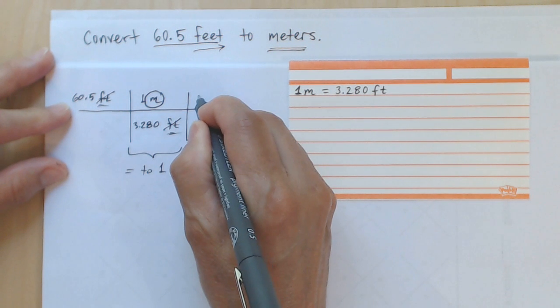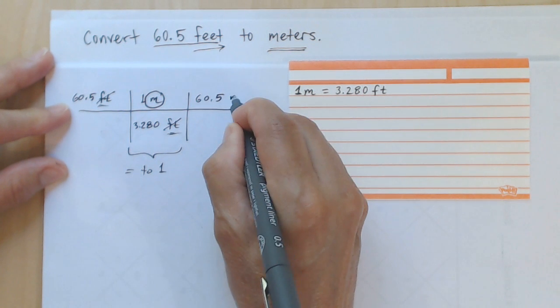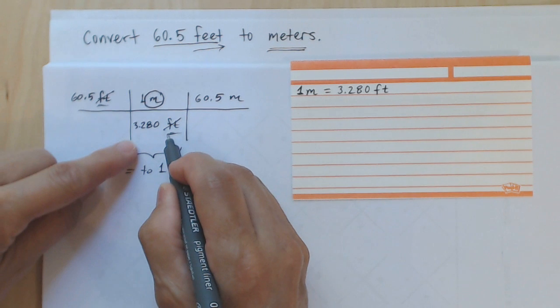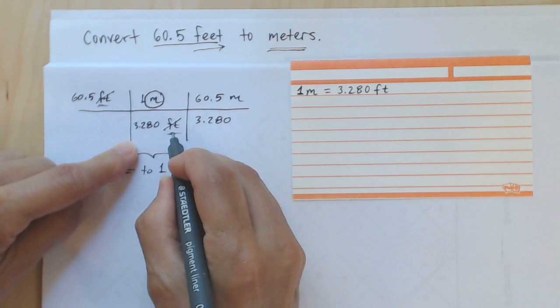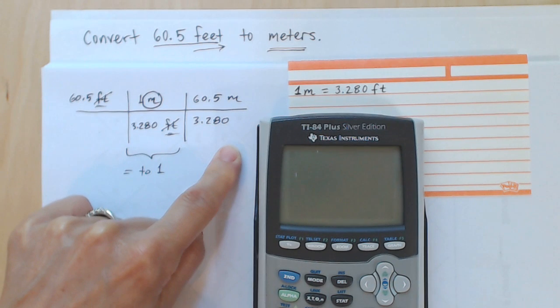So 60.5 times one is 60.5, and I have units meters that are not canceled. All I have in the denominator is 3.280. I will not write feet because it's been canceled out, and I'm now ready to do this arithmetic.